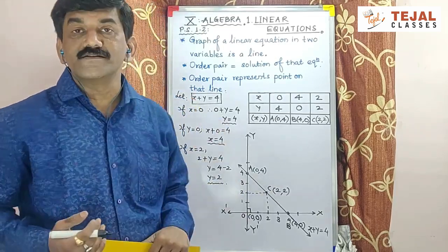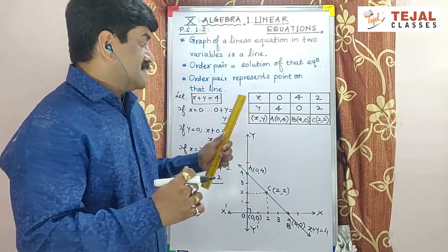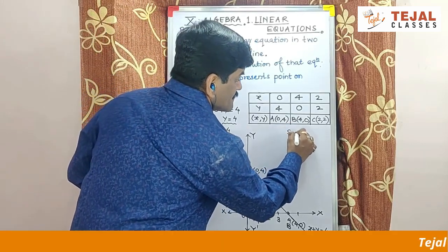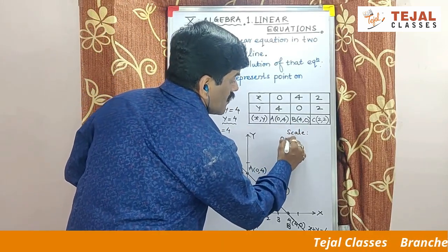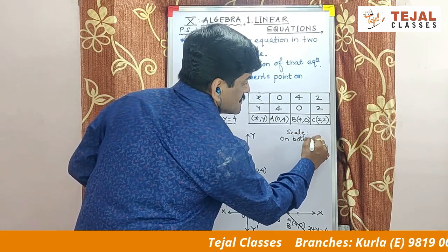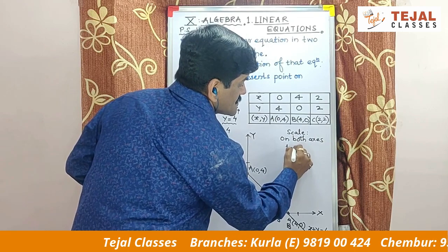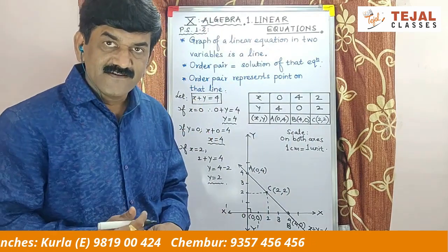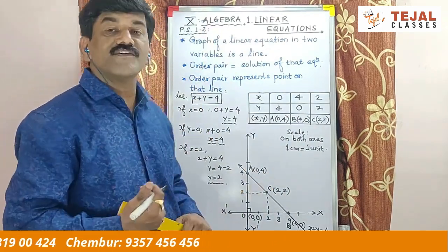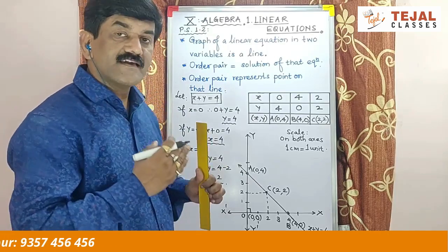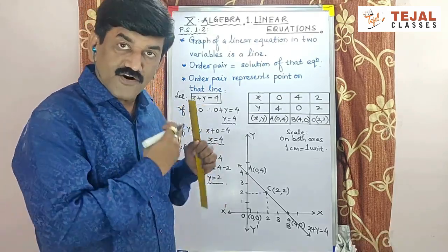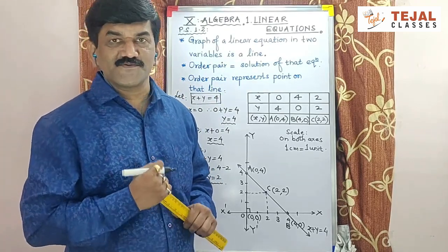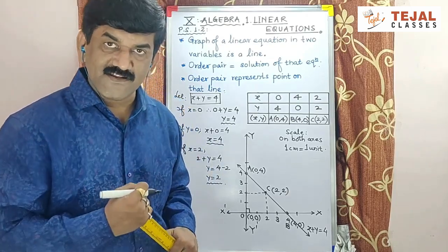Still, this is not complete. यह graph कब complete होता है? जब आप इसको scale note करते हो तब. Without scale, you will not get full credit. Scale on both axes — always 1 cm equal to 1 unit in this question. This is called how to draw a graph of a given linear equation. इस तरह से practice state 8.2 में पाँच सारे equations को draw करना है. अगर यह explanation आपको समझ में आया, तो हमारी channel को subscribe कीजिए.